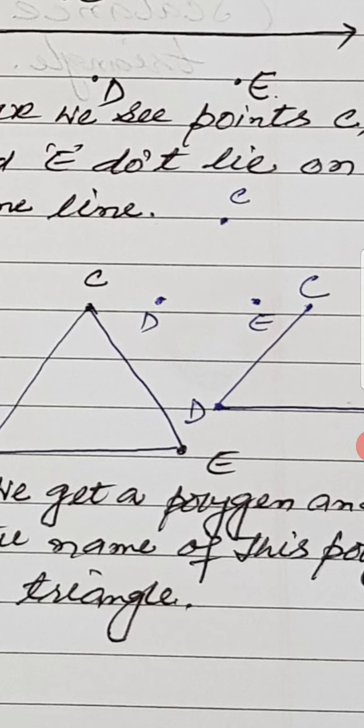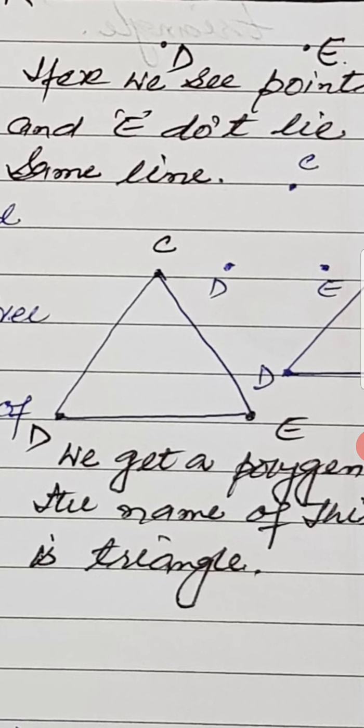And since this triangle is formed by three non-collinear points — points C, D and E — these three points in triangle CDE are called its vertices. The three points, point C, point D and point E, are called the vertices of triangle CDE. So a triangle also has three vertices.